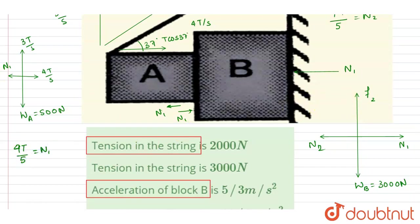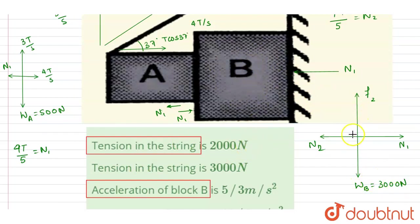Now, block B has a tendency to move downward because only the downward weight force acts on it. So friction force f1 acts in the upward direction on B. As a reaction, block A experiences friction force f1 in the downward direction.